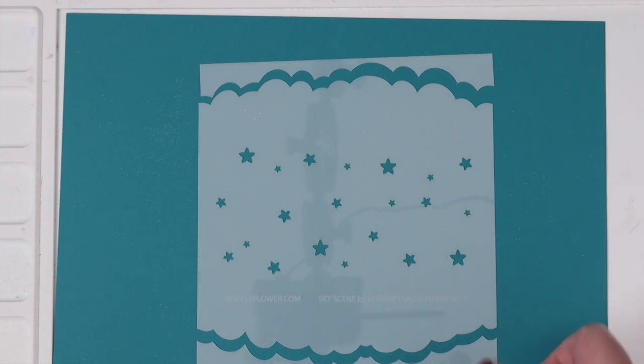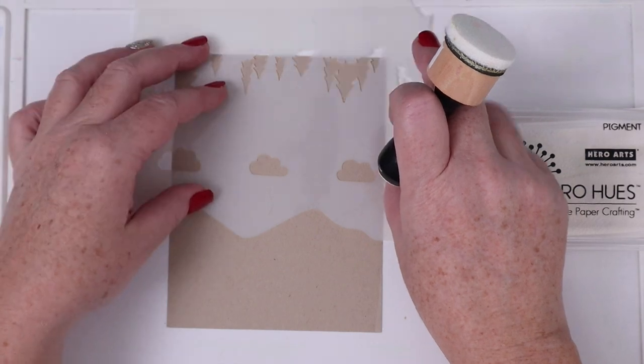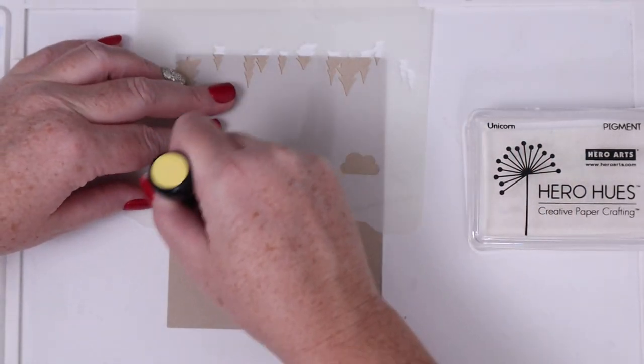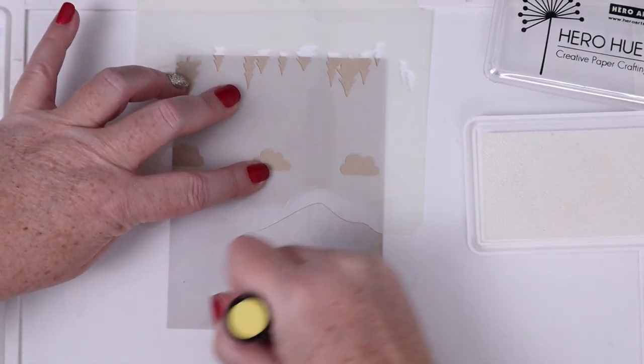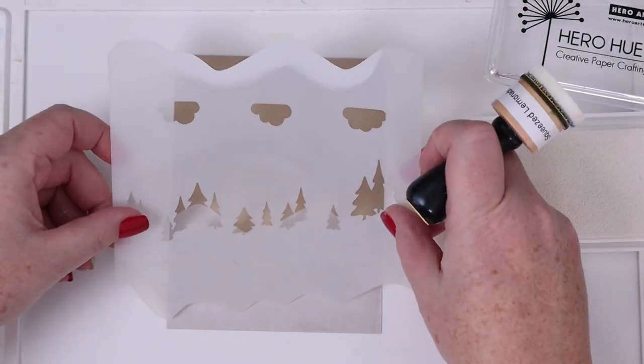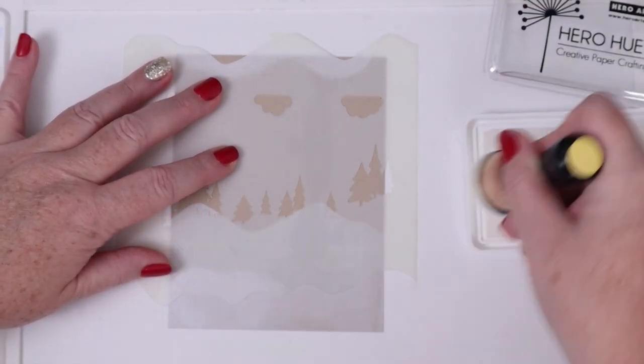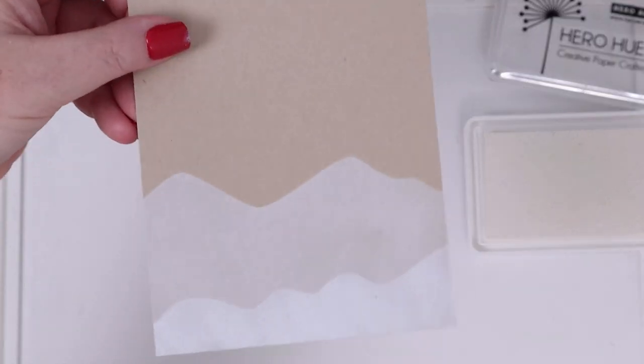I decided to work on a kraft cardstock panel so that if anything didn't get covered on the ground it would look like dirt or mountains. I'm using Hero Arts white pigment Unicorn ink for the first layer of snowy mountains. I did a light coverage for this first layer and then placed a different set of mountains for the second layer and used a more intense layer of the white ink. The little line of pine trees lines up perfectly on this second set of mountains.